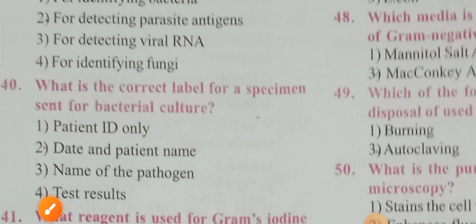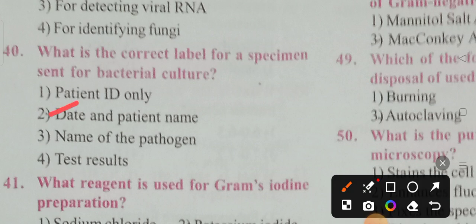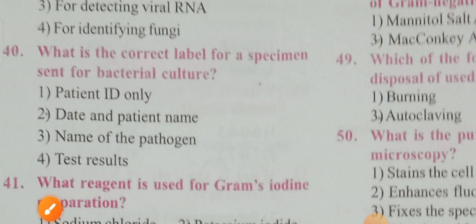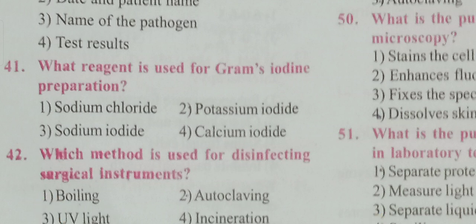What is the correct label for a specimen sent for bacterial culture? Options: patient ID only, date and patient name, name of pathogen, test results. Option 2 is the correct answer — date and patient name. What reagent is used for Gram's iodine preparation? Options: sodium chloride, potassium iodide, sodium iodide, calcium iodide. Option 2 is the correct answer — potassium iodide.